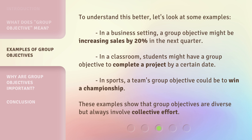To understand this better, let's look at some examples. In a business setting, a group objective might be increasing sales by 20% in the next quarter. In a classroom, students might have a group objective to complete a project by a certain date. In sports, a team's group objective could be to win a championship. These examples show that group objectives are diverse but always involve collective effort.